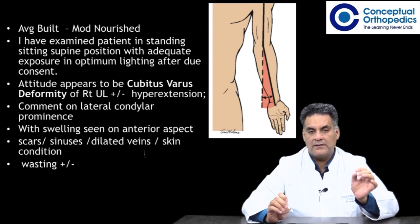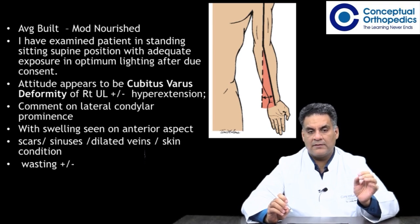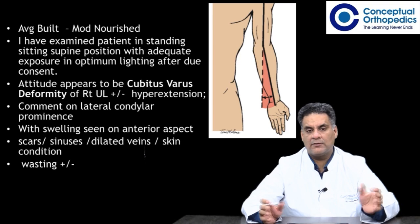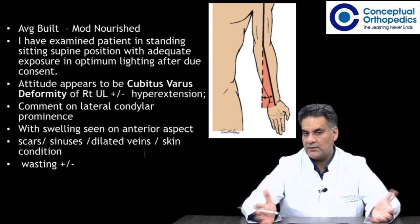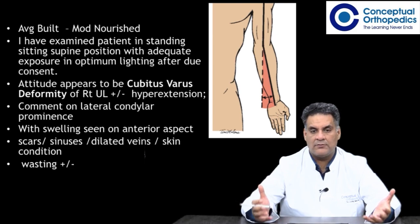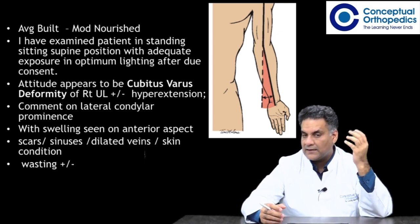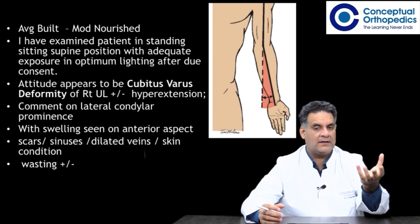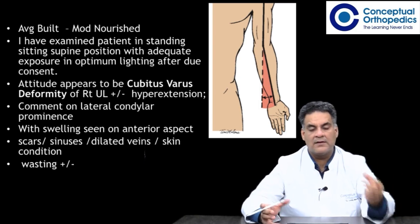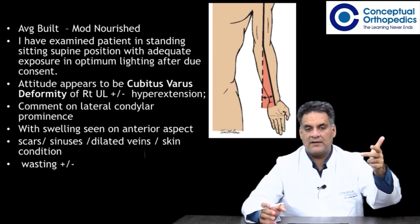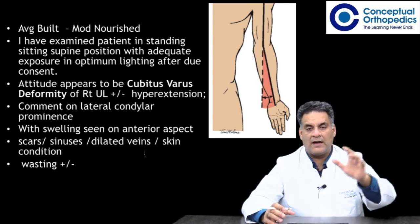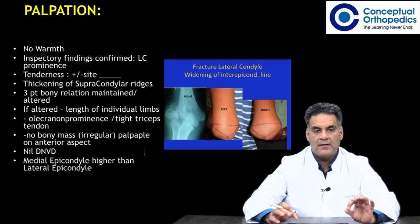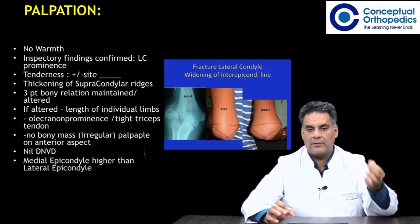On inspection, there appears to be a cubitus varus of the particular limb, with or without hyperextension. Note any prominence of the lateral condyle or the lateral side of the elbow. Note any swelling in the cubital fossa, any scar, sinus, dilated veins, and skin condition. Also comment upon the wasting of the arm and forearm.